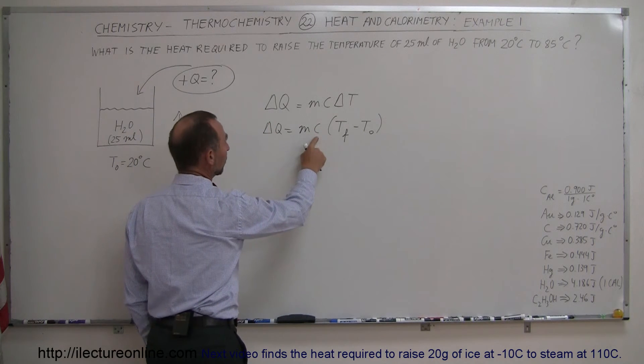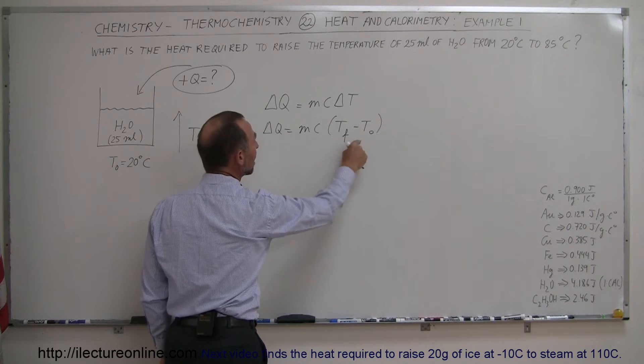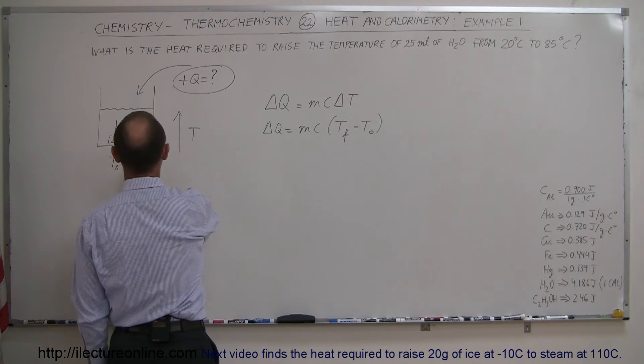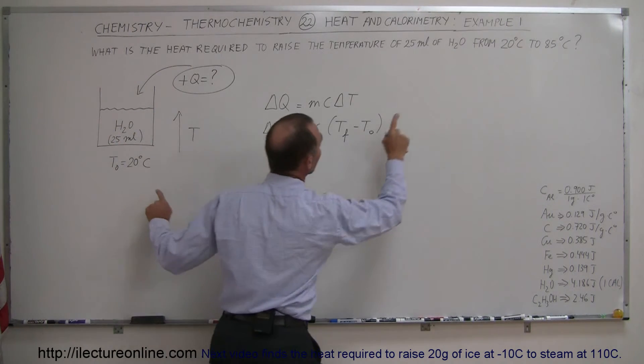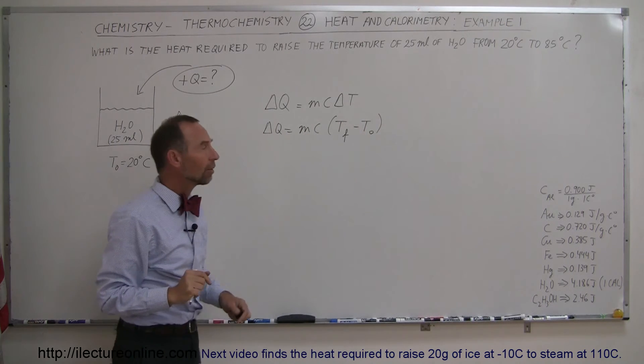So now we need the mass, the specific heat, and the final and initial temperatures. Now the final and initial temperatures we have, initial temperature 20, final temperature 85 degrees centigrade.